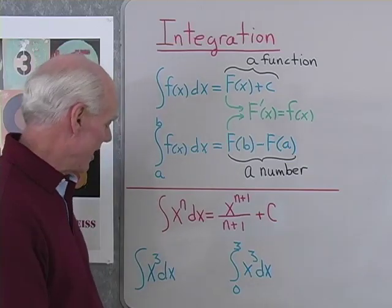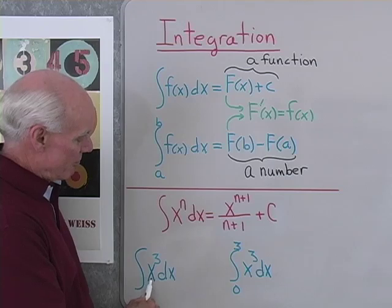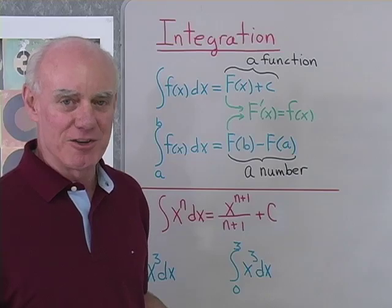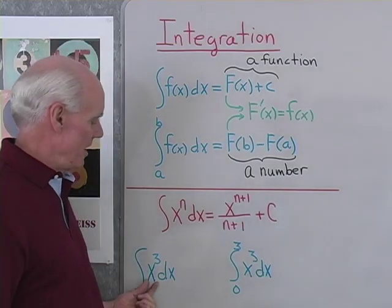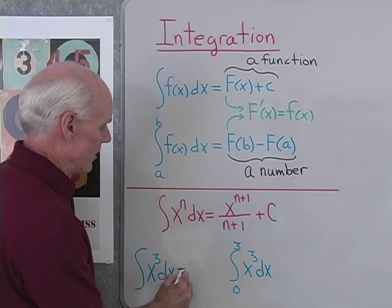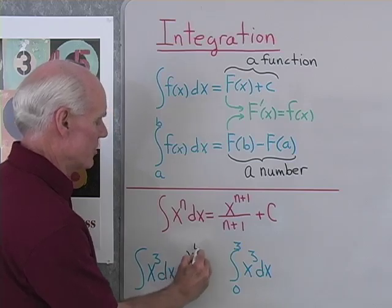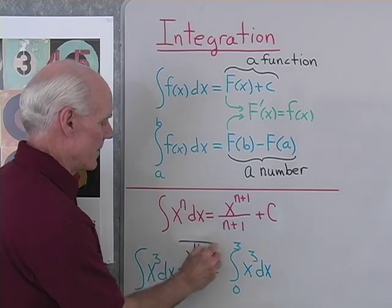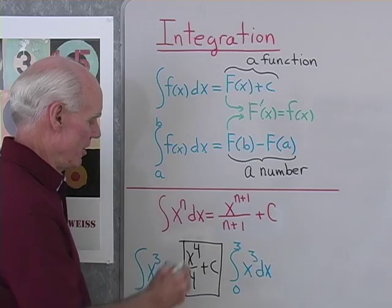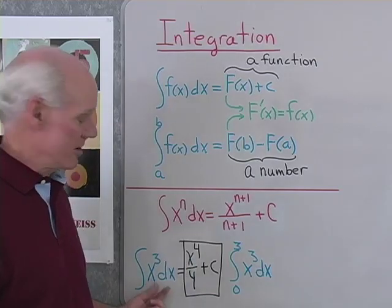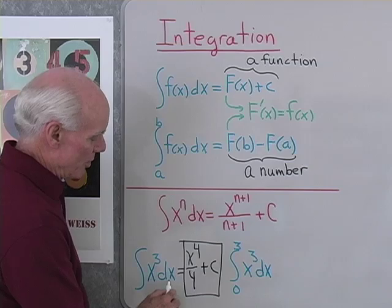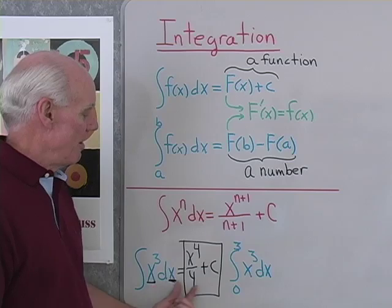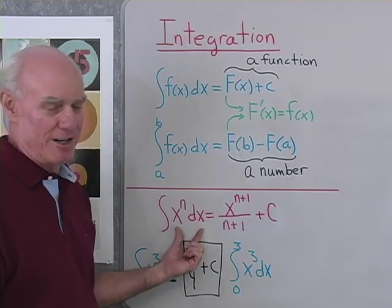Let's see how this works in real life. The indefinite integral of x to the 3rd dx just says: write down all the antiderivatives of x to the 3rd. So that's going to be x to the 4th over 4, plus c. What you want to notice is that the x in the integrand and the x in the formula have to match exactly for us to use this formula.